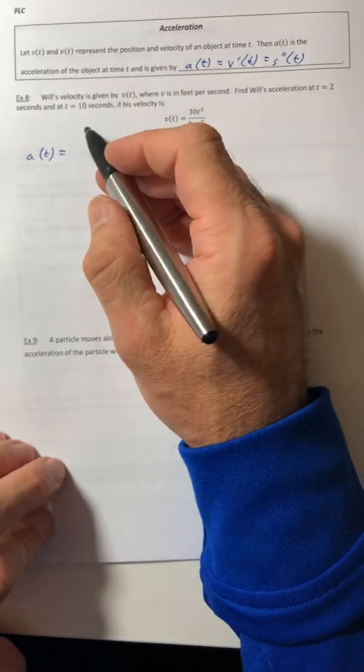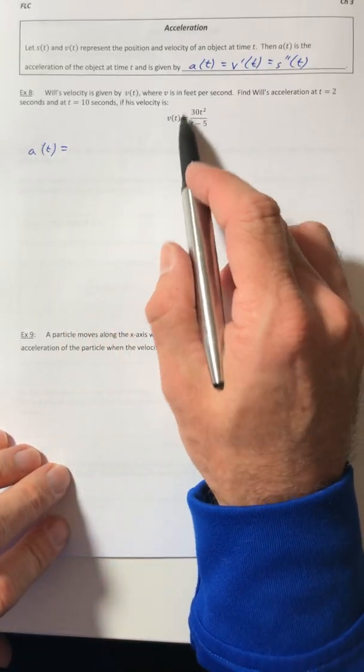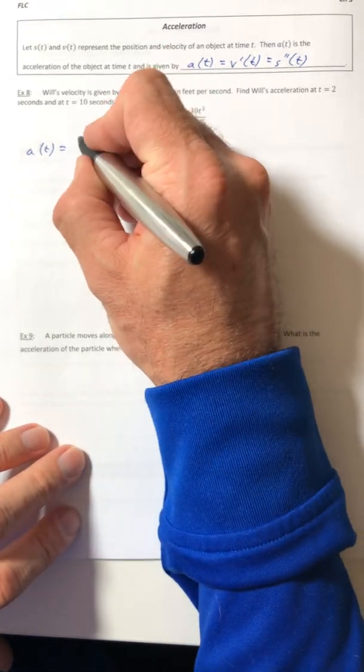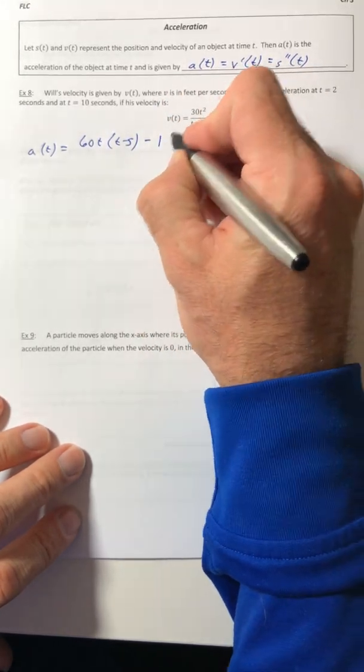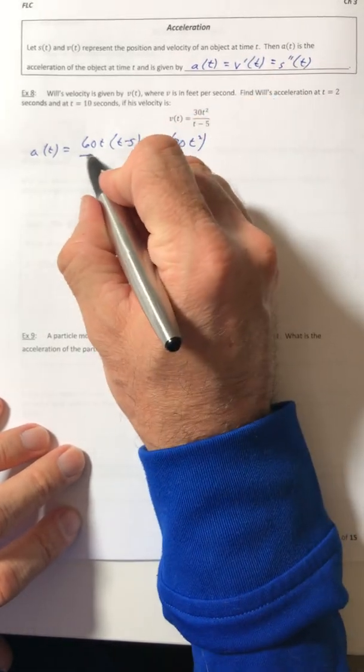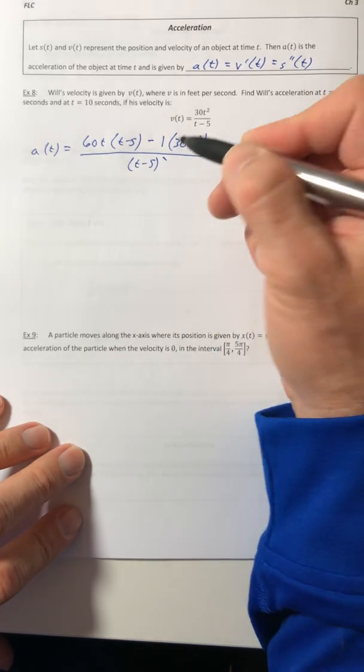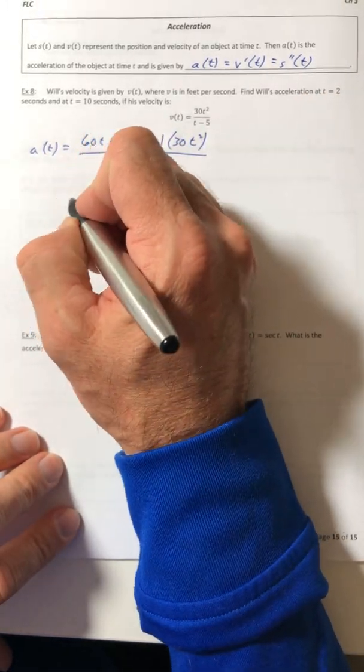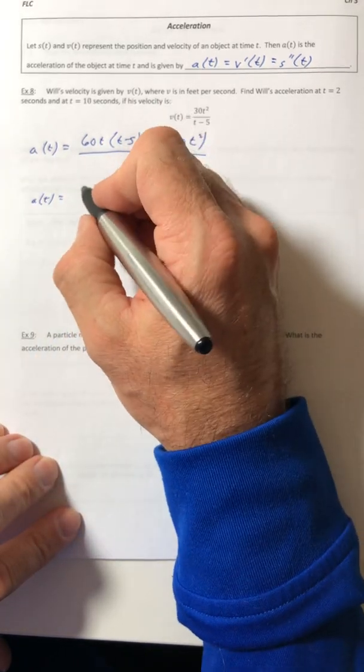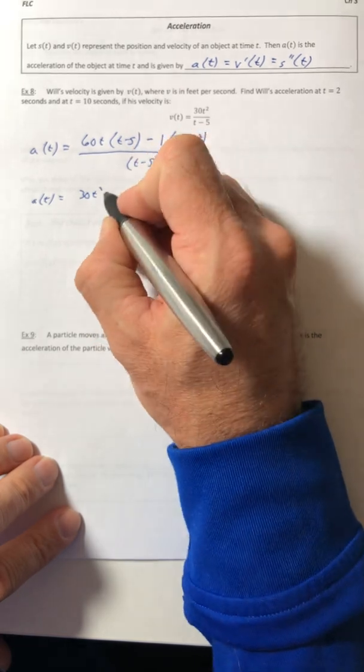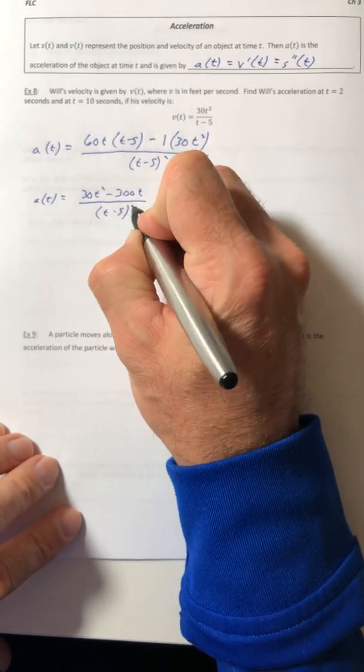So it's asking for the acceleration, so I need to get the derivative, which means I need to use the quotient rule. So the derivative of the top times the bottom minus the derivative of the bottom times the top all over the denominator squared. So let's go ahead and simplify this out. We end up with 30t squared minus 300t all over t minus 5 quantity squared.